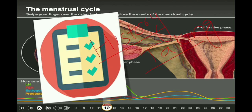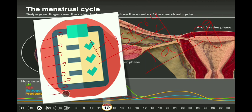Those symptoms include: previous cycle pattern, LMP, onset of bleeding, duration of bleeding, amount of bleeding, history of flooding, passage of clots, associated pelvic pain, and intermenstrual and post-coital bleeding. These are the questions we ask normally in our routine practice related to menstrual history.